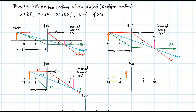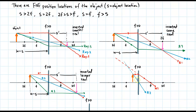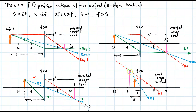When the object is inside the focal point, things change. Ray one goes parallel to the central axis, refracts, but then we follow it backwards using a dashed line. Ray two goes through the focal point and reflects back. Using only two rays, where they cross is where the image is formed. The image in pink is erect, larger than the object, and virtual because it's on the same side as the object.